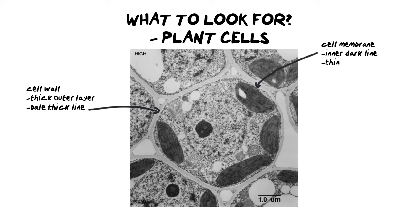Sometimes when you zoom in closer the cell membrane is actually easier to see. Then we're going to look out for the cytoplasm. The cytoplasm is a little bit easy because it's basically all the filling of the cell, but we've got to be careful about what we actually point at with a label line. In this image the majority of the cell looks grainy — that grainy stuff is the cytoplasm. You're going to look for a pale gray grainy texture to identify your cytoplasm.